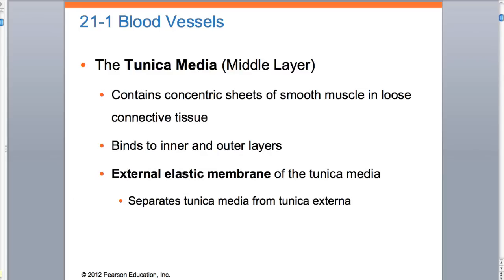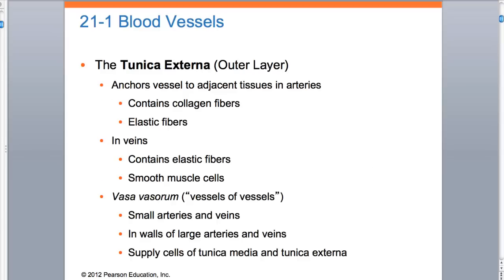The tunica media features smooth muscles. The tunica media and externa slide is important for two reasons: it has collagen fibers, which is basically your connective tissue, and it has elastic fibers. The elastic fibers tend to be more plentiful on the AA side - meaning arteries and arterioles - enabling them to create the high pressure needed to move the blood forward. Veins on the other hand contain elastic fibers and smooth muscles, but much less, which is why page 709's picture and chart are so important.